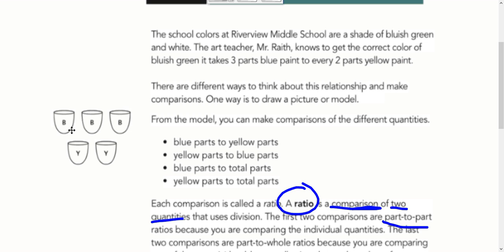In this situation, to make a certain type of green, we have to mix three parts of blue and two parts of yellow. We can write this as blue parts to yellow parts, yellow parts to blue parts, blue parts to total parts, yellow parts to total parts. All of these comparisons here are what we call ratios.